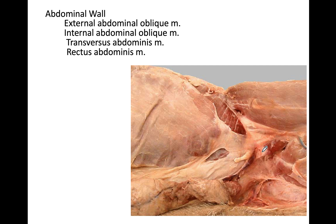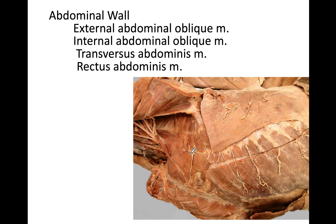Now we'll talk about the muscles of the abdominal region. We have four muscles: the external abdominal oblique, the internal abdominal oblique, the transverse abdominal muscle, and the rectus abdominal muscle. You can see that the fibers of the external abdominal oblique run caudoventrally, similar to the external intercostal muscle. The muscle running in the opposite direction, cranioventrally, is the internal abdominal oblique muscle. This external abdominal oblique covers part of the thoracic and lumbar region.